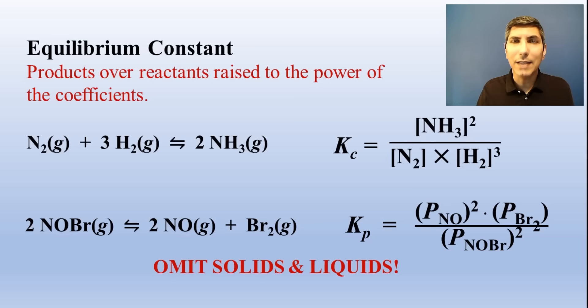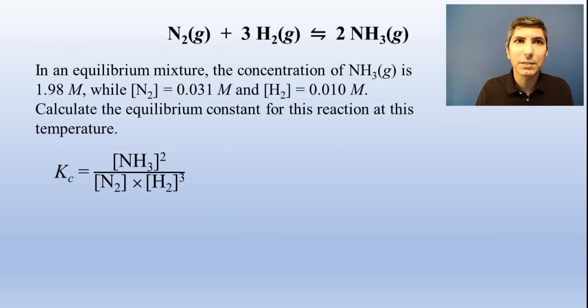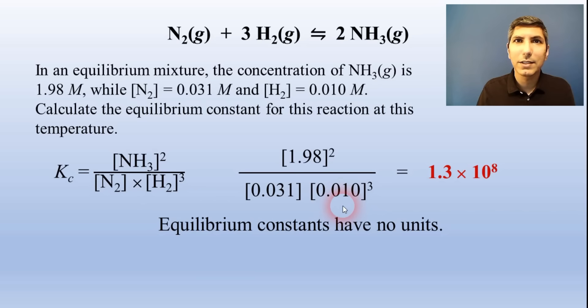Be aware that the reaction quotient, Q, is written the same way as the equilibrium constant, but it includes values that aren't necessarily at equilibrium. To calculate the equilibrium constant, plug in the equilibrium concentrations into the expression and compute the answer. Likewise, if you know the equilibrium constant and all but one of the equilibrium concentrations, you can solve for the missing value. This process works the same for Kc as it does for Kp.